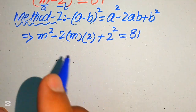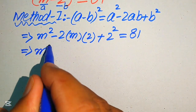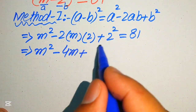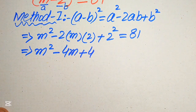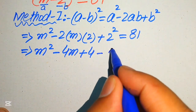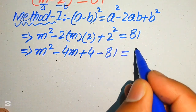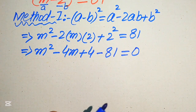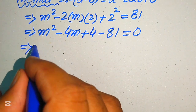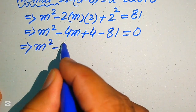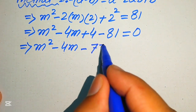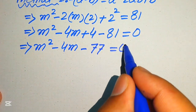After simplification, we have m squared minus 4m plus 4 equals 81. Moving 81 to the left-hand side gives m squared minus 4m plus 4 minus 81 equals 0. Simplifying further, 4 minus 81 equals minus 77, so the equation becomes m squared minus 4m minus 77 equals 0.